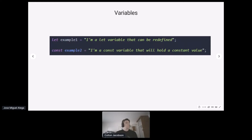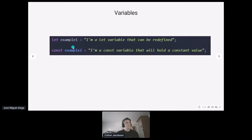In JavaScript, there are three ways to define variables, but the main two are 'let' and 'const'. The 'let' keyword is similar to variable definition in other languages, but JavaScript has no types — so you can reassign a 'let' variable to any type without error. 'Const' works like constants in other languages: once set, you can't reassign it in a later line.